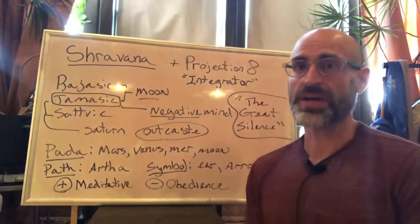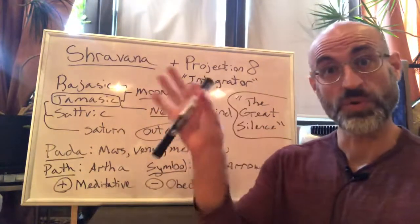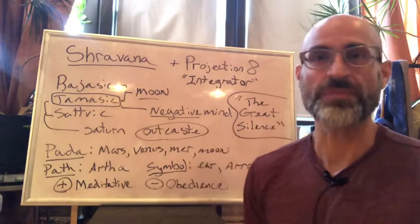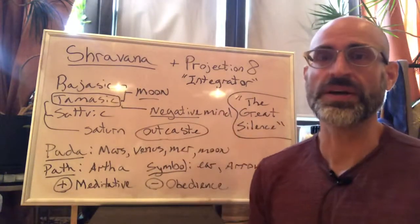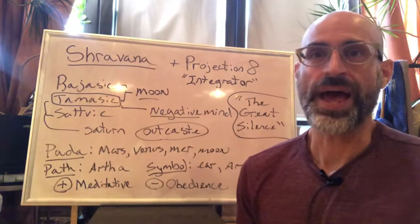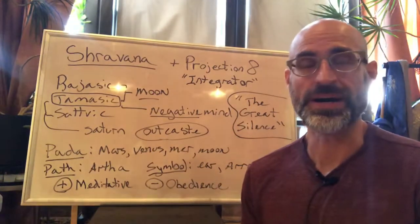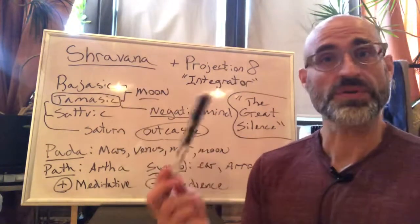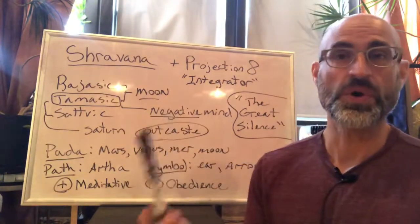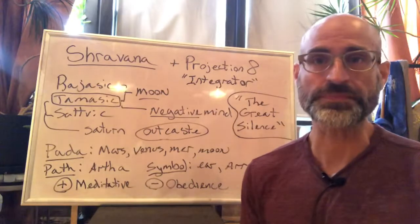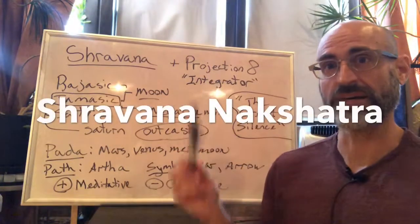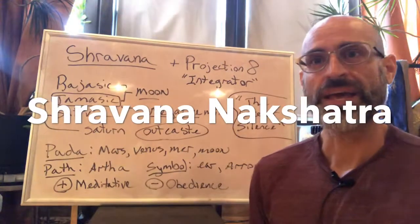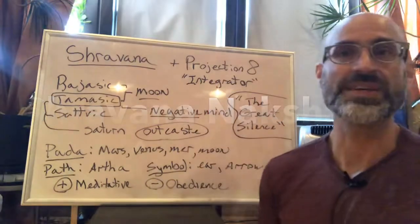So today's nakshatra — one other thing I should say is the sun, the moon, and the ascendant are kind of the most prominent energies in your chart, so those are generally what I'm focusing on with these videos. However, this particular nakshatra, we're going to look a little bit at how certain nakshatras placed in certain planets can be beneficial or bring difficulty. So Shravana nakshatra, the nakshatra I'm going to look at today, is the 22nd nakshatra, and it's associated with Projection 8 or the Integrator.